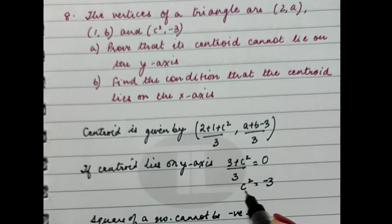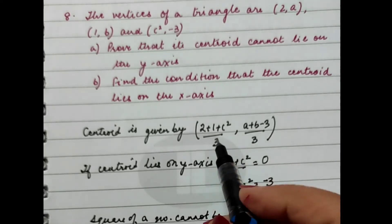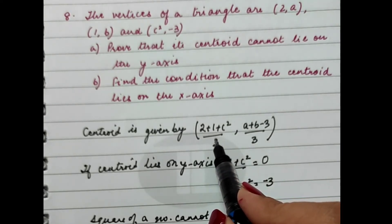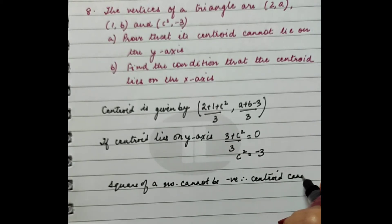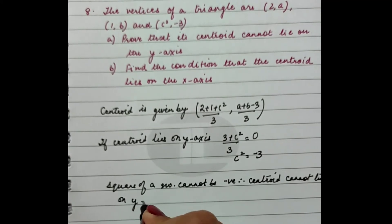Therefore, c² cannot be -3. That means the abscissa cannot be 0. Therefore, I can say that the centroid cannot lie on the y-axis.